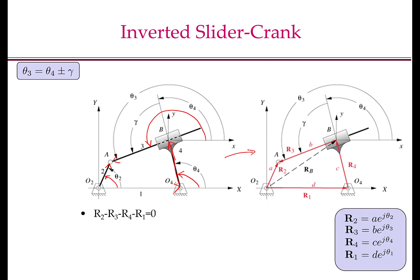So I can write R2, R3, R4, R1 in the complex number form, where A, B, C, D are the respective lengths and theta-2, theta-3, theta-4, theta-1 are the respective angles. Now we can see that O2A equals O2O4 plus O4B plus BA, i.e., R2 equals R1 plus R4 plus R3. Taking the vectors R1, R4, R3 to the left-hand side, we have the vector loop closure equation as shown here.